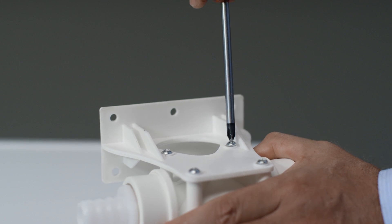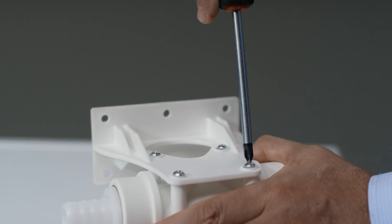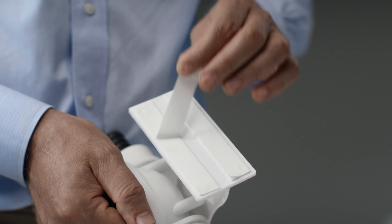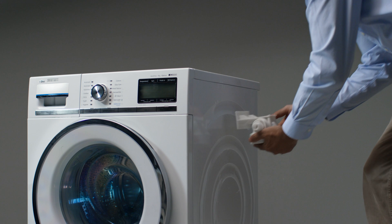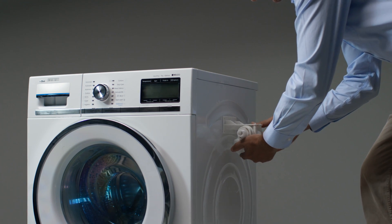Take the housing top and attach it to the holder with the four screws provided. Remove the protective layer from the double-sided tape. Stick the holder and the housing top to the side of your washing machine.